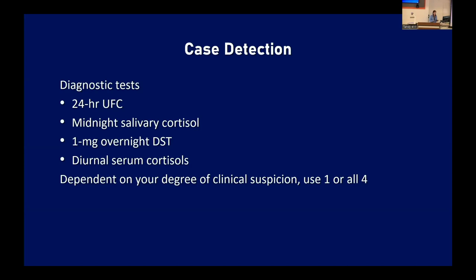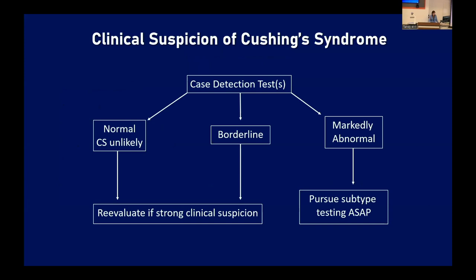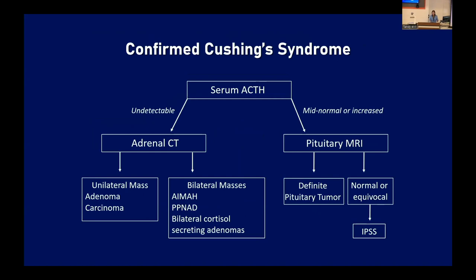Depending on your suspicion, you may get one test or all four; often at least two positives are needed to confirm the diagnosis. Anyone taking a cortisone or cortisol-containing agent will cause lab testing to read high, whereas many synthetic steroids will actually suppress cortisol and cause a low reading. If case detection testing is completely normal, Cushing's is unlikely, but you can retest in three to six months or a year. If borderline, retest if still concerned. If markedly abnormal — two to three times the upper limit of normal — pursue subtype testing.